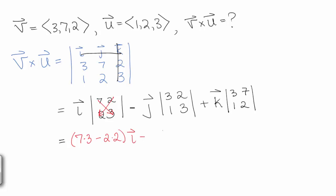Minus, let's do this again with J, we have 3 times 3 minus 2 times 1. And then with K, we have 3 times 2 minus 7 times 1.